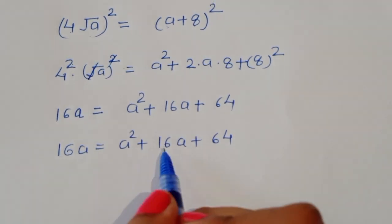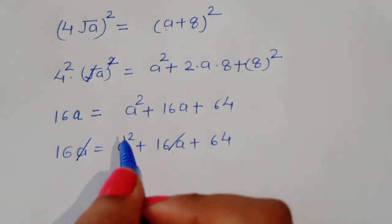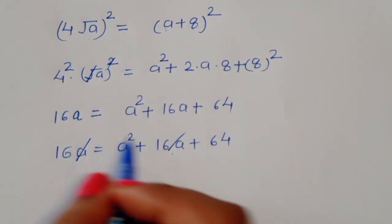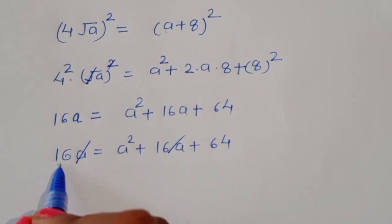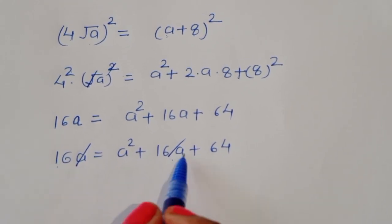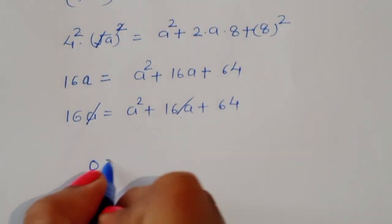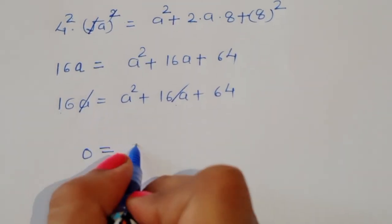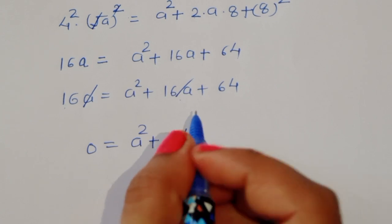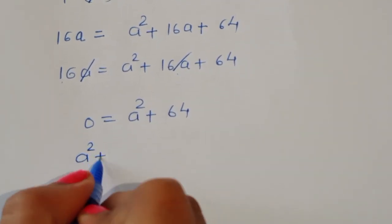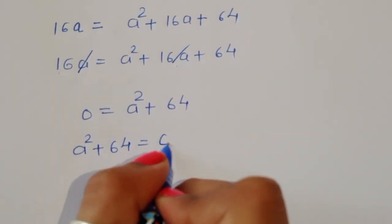We can see 16a appears on both sides, so they cancel. We are left with 0 = a² + 64, or a² + 64 = 0.